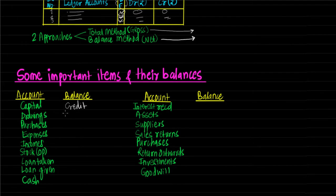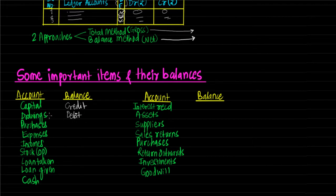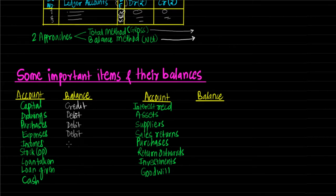Drawings will always have a debit balance because drawings means the proprietor is withdrawing money from the business, so the proprietor's account is debited — rule of personal account says 'debit the receiver.' Purchases would have a debit balance; real account rule says 'debit what comes in.' Expenses are nominal accounts with debit balance. Incomes have credit balance; nominal account rule says 'credit all incomes and gains.'